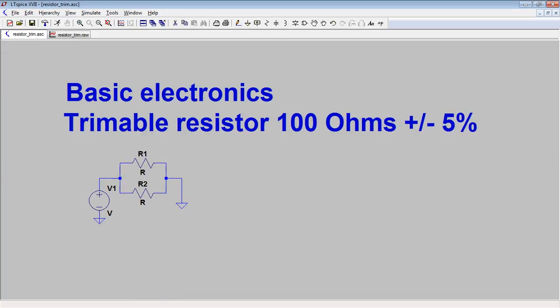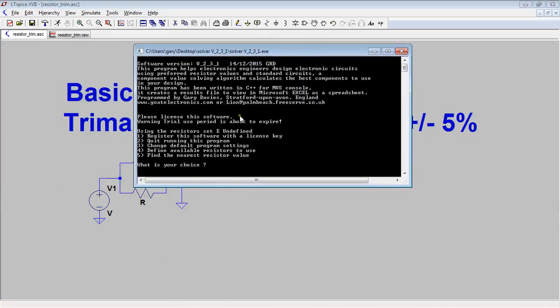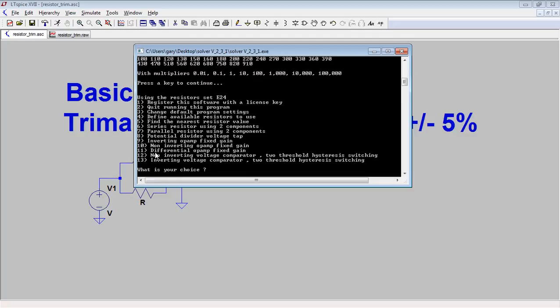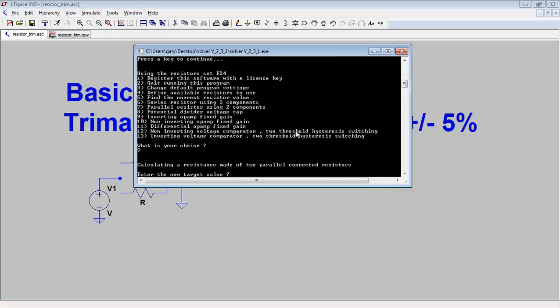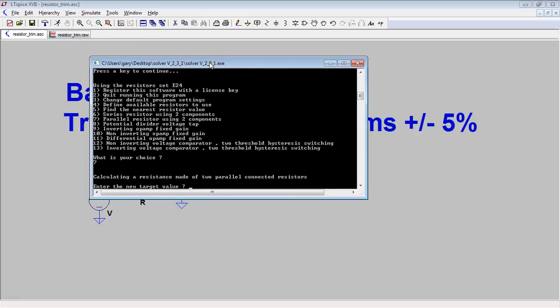Okay, so I'm going to use this tool I've got to try and work it out. So define resistors here, number four, you only want to use the E24 series, and then I want a power resistor using two components. Right, so what is the target value? Well, I'm going to put in the positive maximum range, so I want to put in 105 ohms.